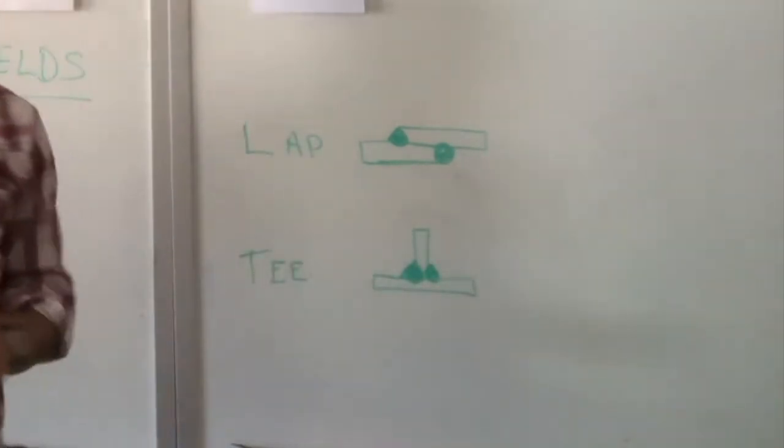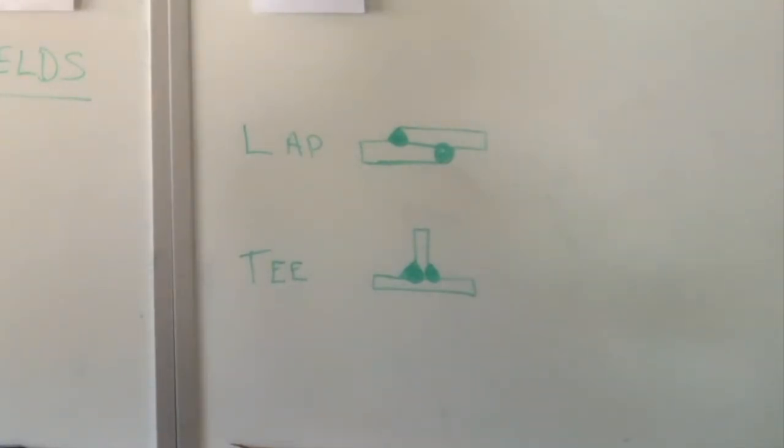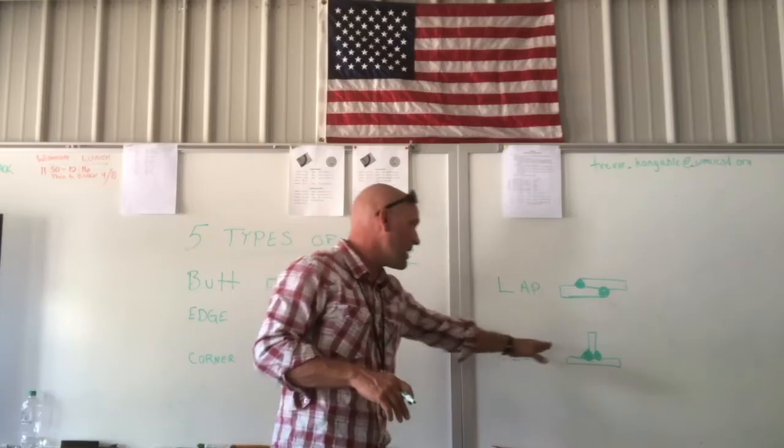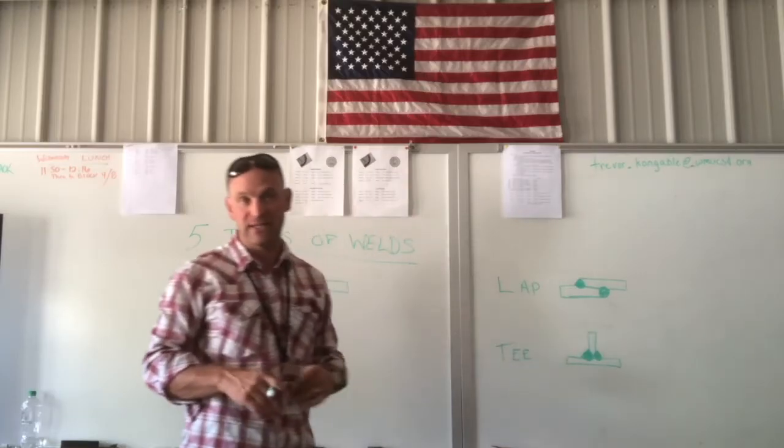So that is one of the things we call, it's not really a type, it's the weld. So the type of weld is a T-weld, and we have a fillet on the T-weld.